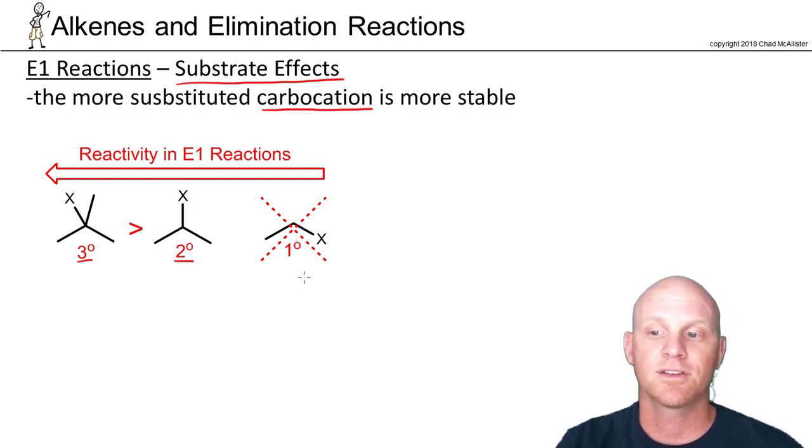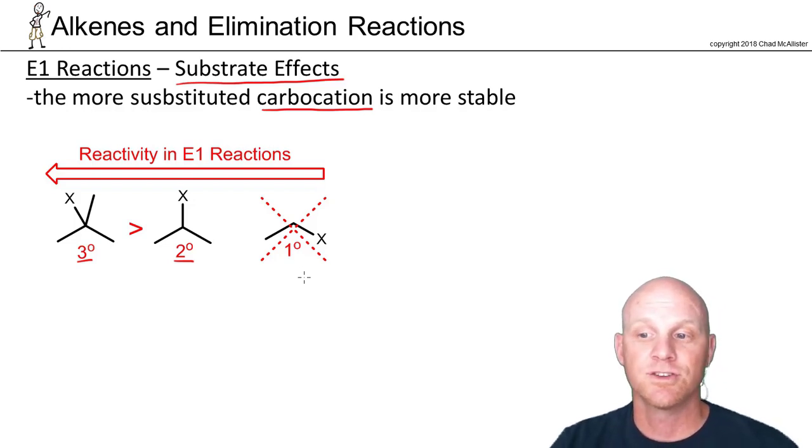As a result, tertiary halides are the fastest in an E1 reaction, followed by secondary halides. And just like in SN1, primary halides generally don't react unless they have a chance of being stabilized by resonance. And just like with E2, we don't have to worry about methyl halides for elimination reactions because they don't even have two carbons, so they can't form a carbon-carbon double bond. Again, all about the carbocation for E1 reactions.